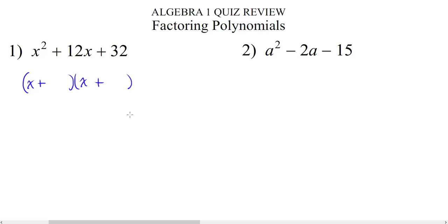We're looking for two numbers that multiply together to make 32 and add together to make 12. That is going to be 8 and 4. 8 times 4 is 32 and 8 plus 4 is 12. Since both are positive, it doesn't matter where we put the 8 or the 4. So this is the correct answer.